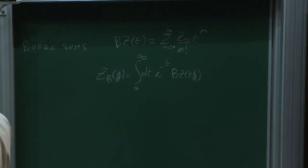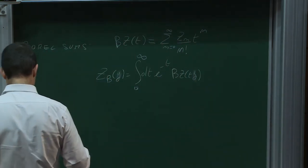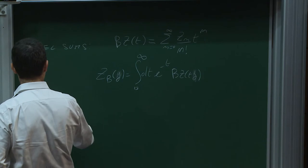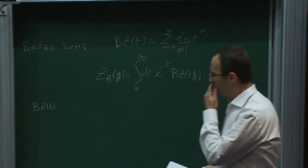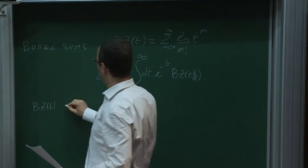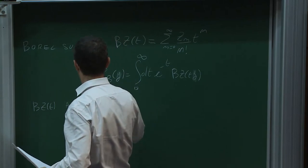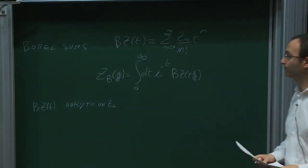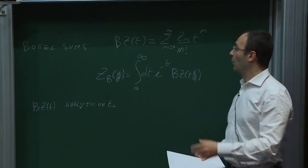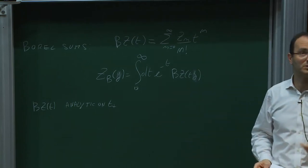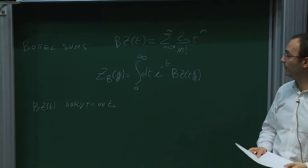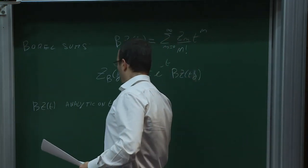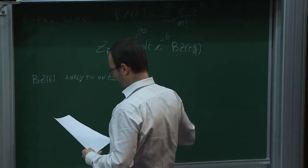For the Borel resummation to make sense, B_Z(t) must be analytic on t≥0 — the positive real axis — since we are integrating over it. If it is not analytic on t≥0, we say the series is not Borel summable. Even if B_Z exists and there are no singularities on t≥0, this is not guaranteed to equal the original function Z(g).